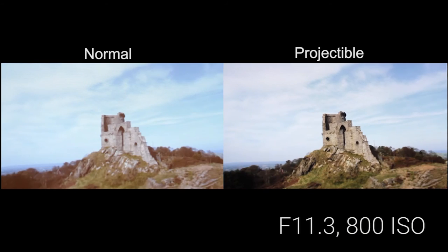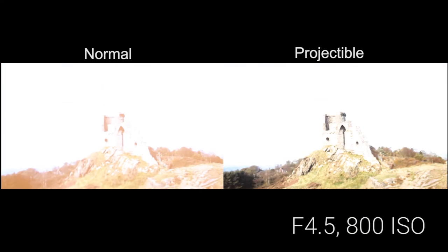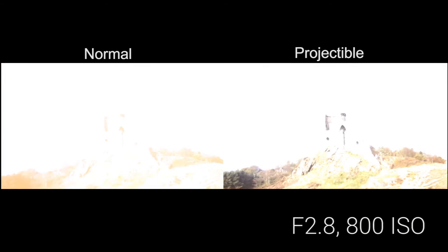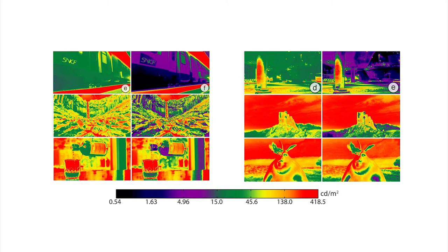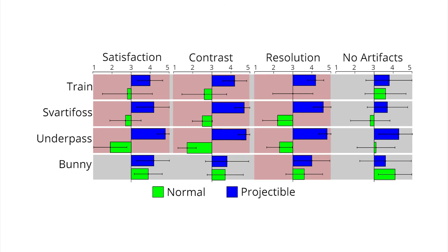For the resolution improvements, please see the high-resolution pictures in the paper. We also show empirical measurements comparing the luminance channel of the projector only and the projectable, measured with exposure bracketed images using a calibrated digital SLR. We present viewer feedback from a 10-person study showing that users prefer the projectable for overall satisfaction, contrast, and resolution, and couldn't accurately determine artifacts.